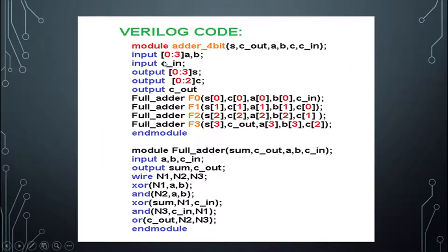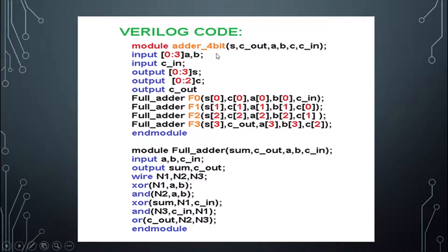Now we are going to write code for the 4-bit ripple carry adder. This module defines the full adder discussed in the previous slides. For designing a ripple carry adder, we must instantiate the full adder as many times as the number of bits required. For a 4-bit ripple carry adder, we instantiate the full adder 4 times. We call the module 'adder_4bit' followed by the outputs S and C_out.